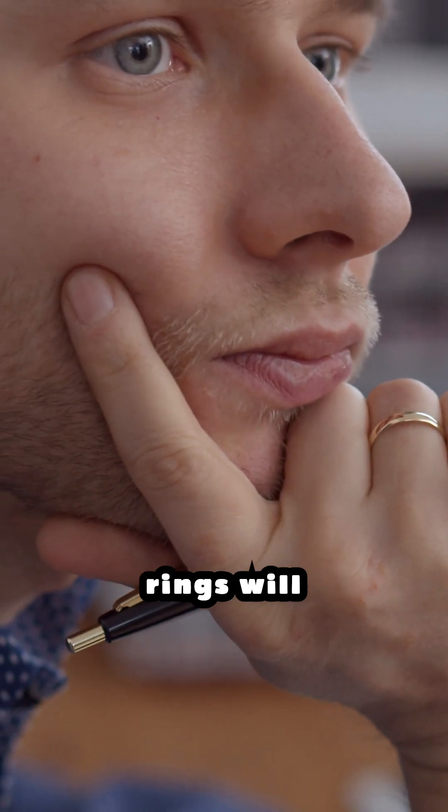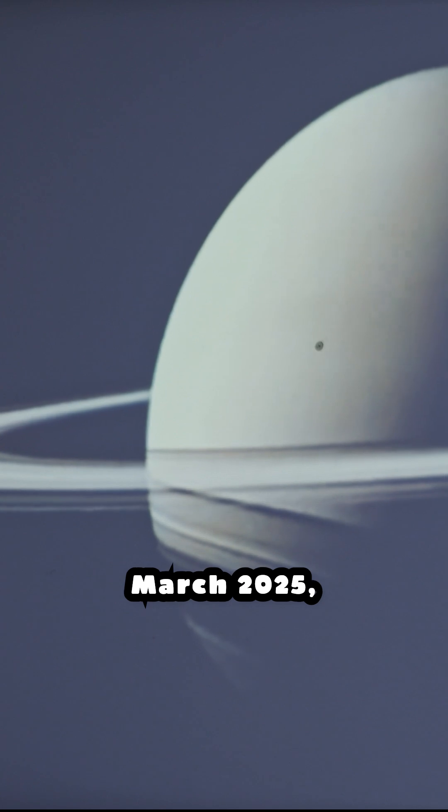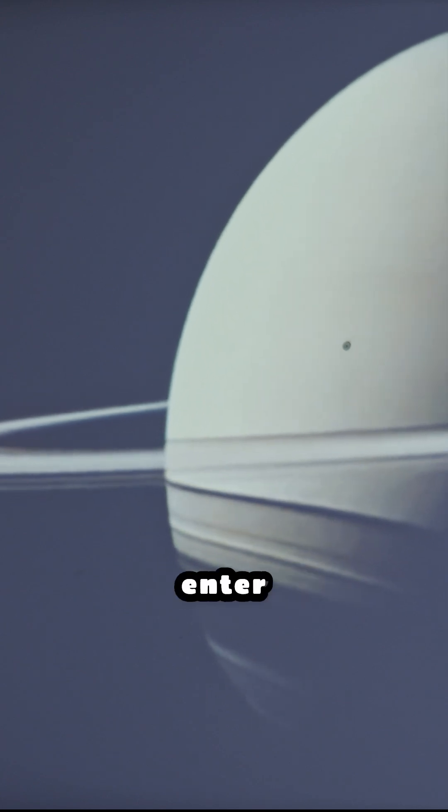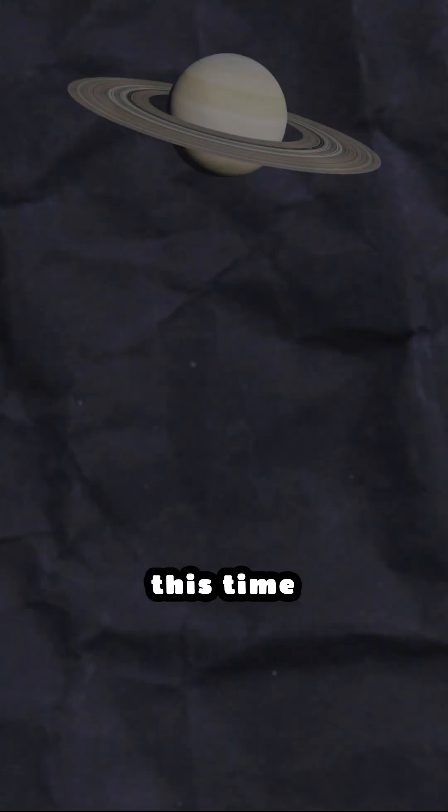Why are scientists saying the rings will disappear in March 2025? Because in March 2025, Saturn will enter its equinox. It happens every 15 years and during this time,